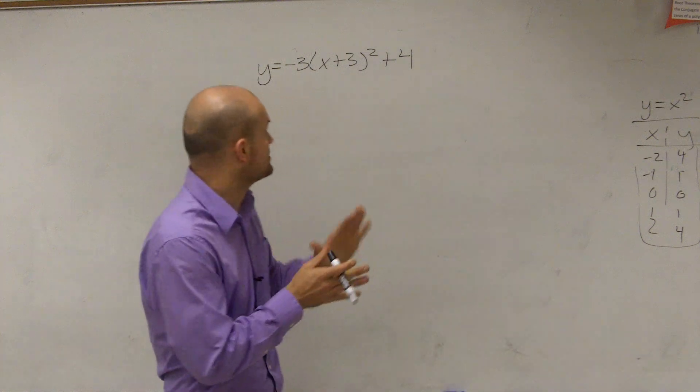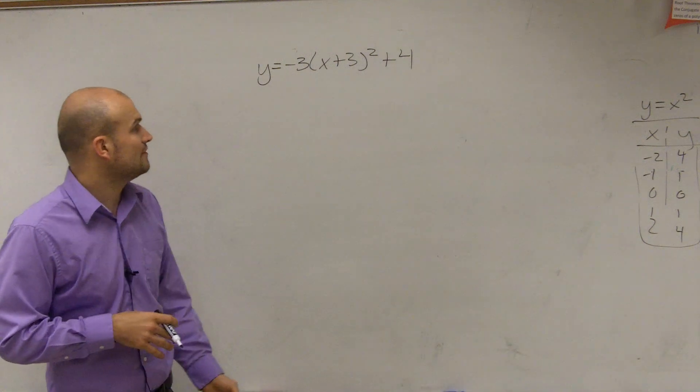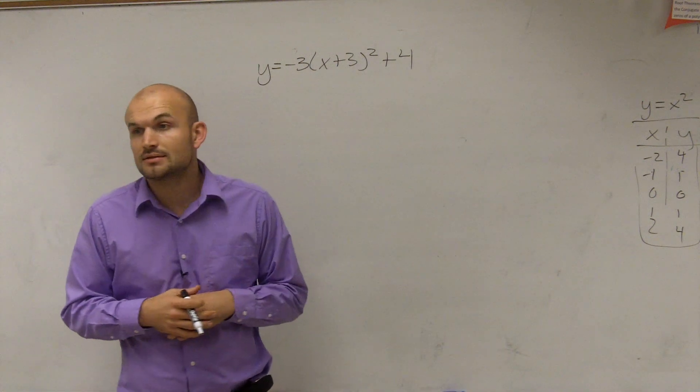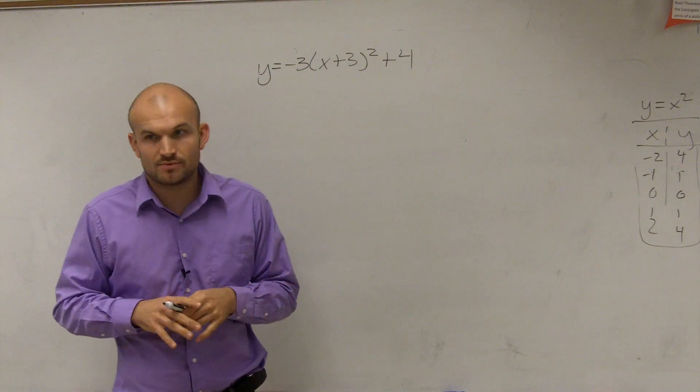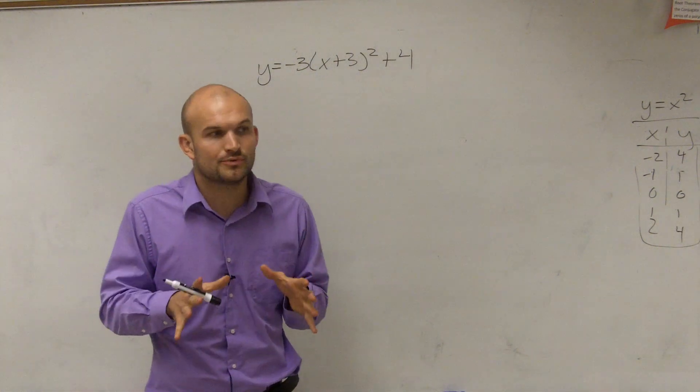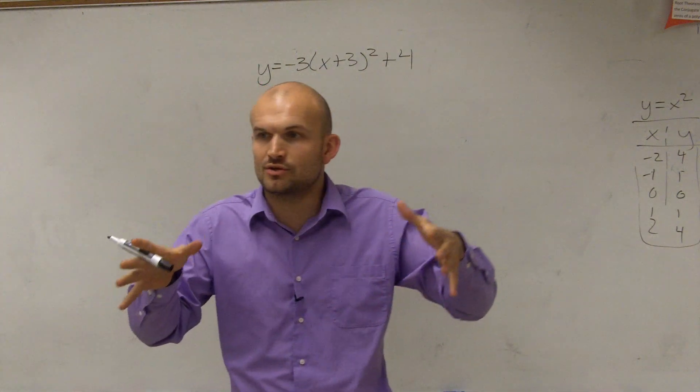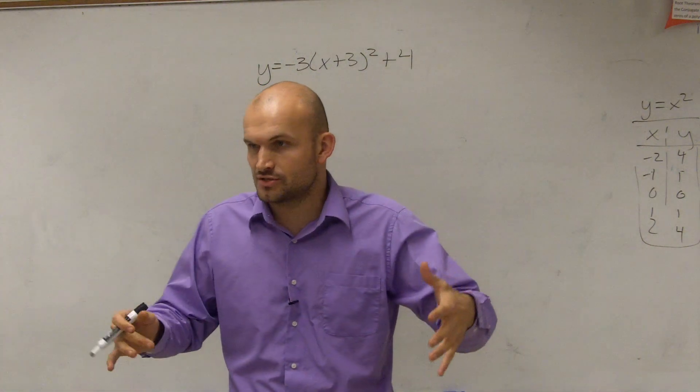So ladies and gentlemen, what I'd like to do is show you how to graph negative 3 times x plus 3 squared plus 4. So to graph this, I want to go through and show how the transformations are going to affect this graph.